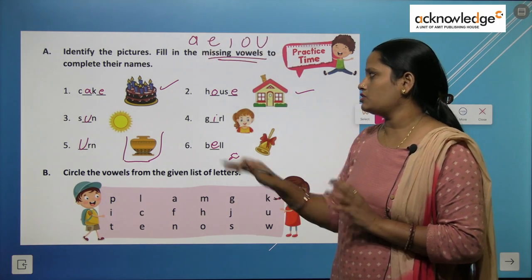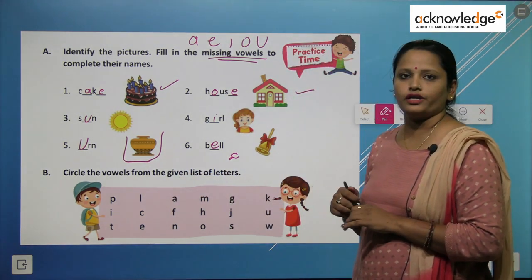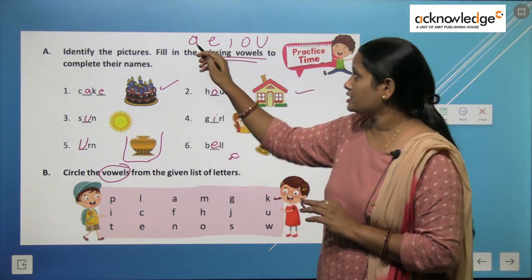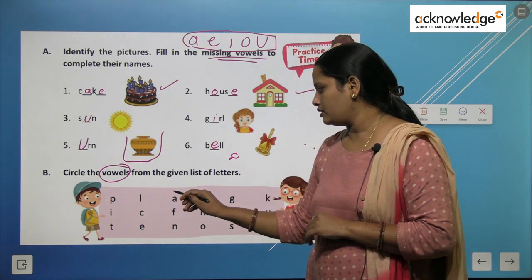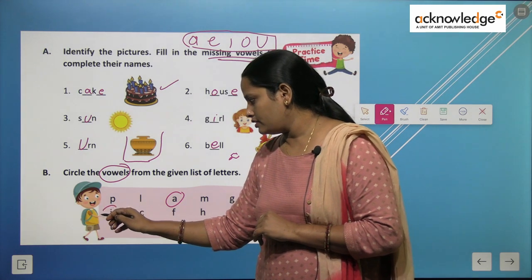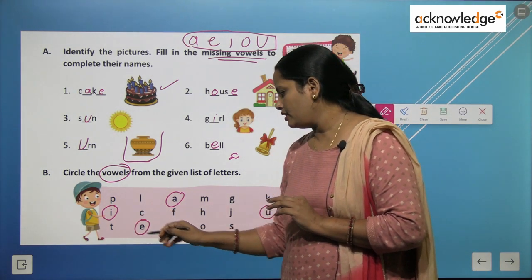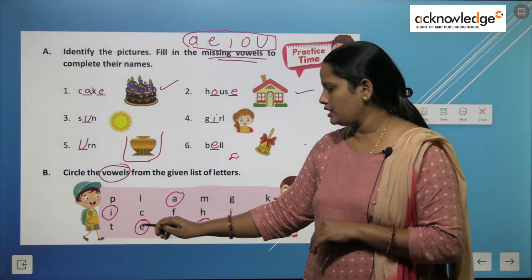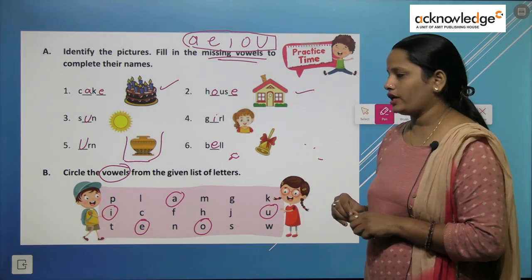In the next exercise, we have to circle the vowels from the given list of letters. Some letters are given and we circle whichever vowels — A, E, I, O, U — appear. In the first line: T, L, A — circle A. M, G, K — nothing. Then I — circle I. C, F, H, J, U — circle U. T, E — circle E. N, O — circle O. S, W — nothing. So all the vowels A, E, I, O, U are circled.